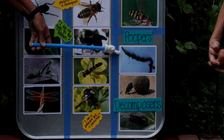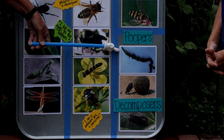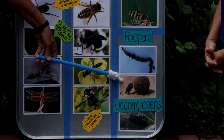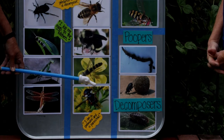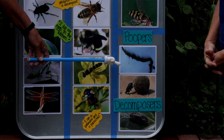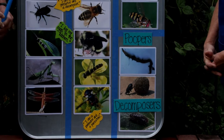First we have the earthworm — the star of the poopers. It consumes all this decaying matter and poops out wonderful humus soil. The next one is a dung beetle, which collects poop and helps decompose it. And at the bottom is a pill bug, who is also a wonderful pooper. You want to see all these things not only in your soils and garden, but also in your compost bin — they're working to enrich the soil for better gardening.